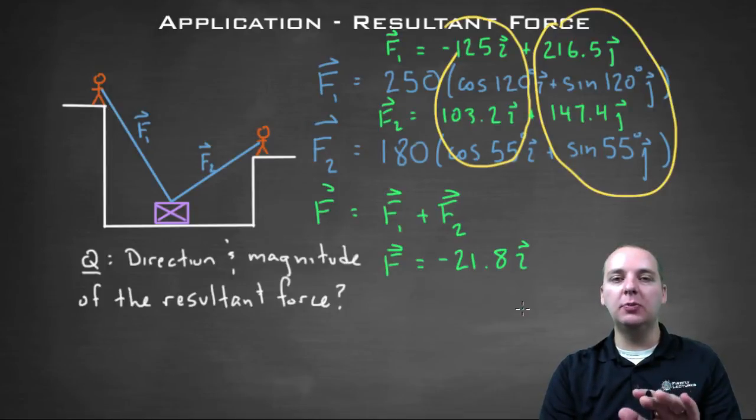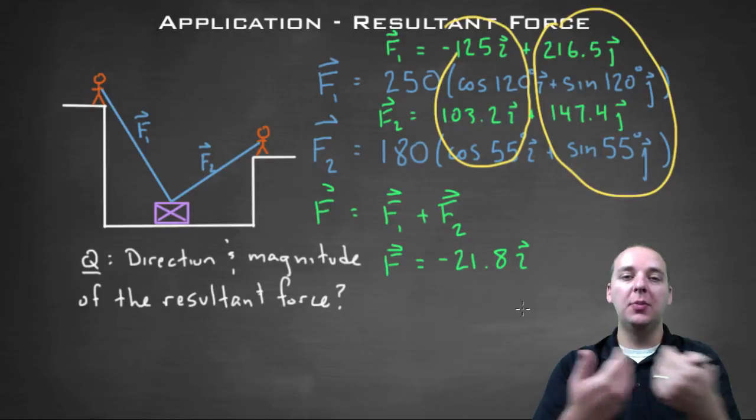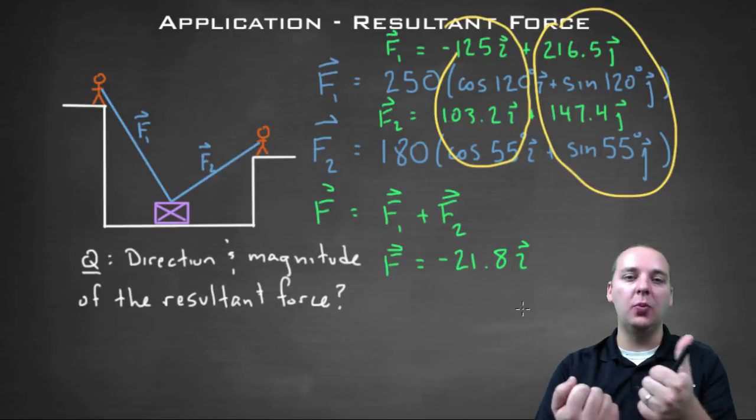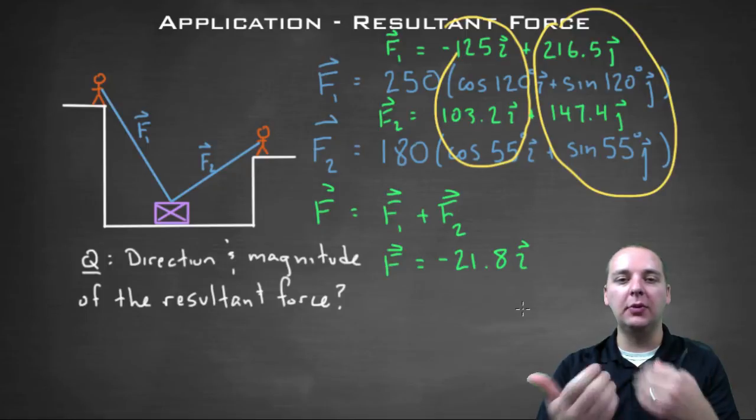And notice that's much smaller than either one of their individual I components because a lot of cancellation happened. One guy was pulling left, one guy was pulling right, so they cancelled out a lot.